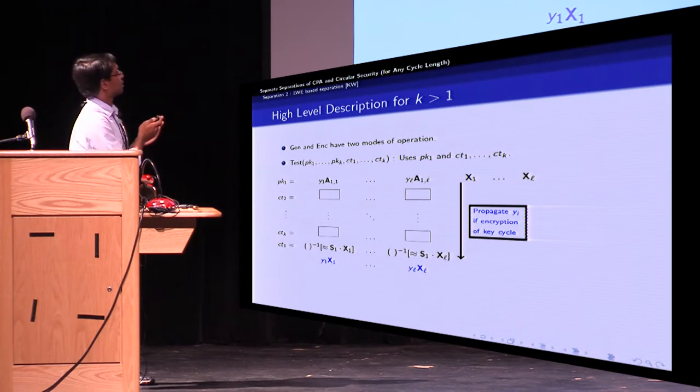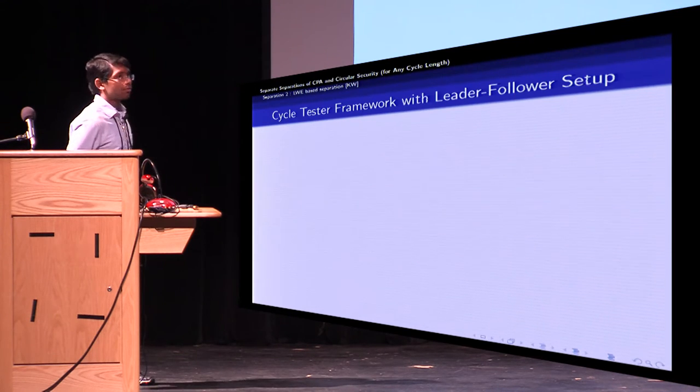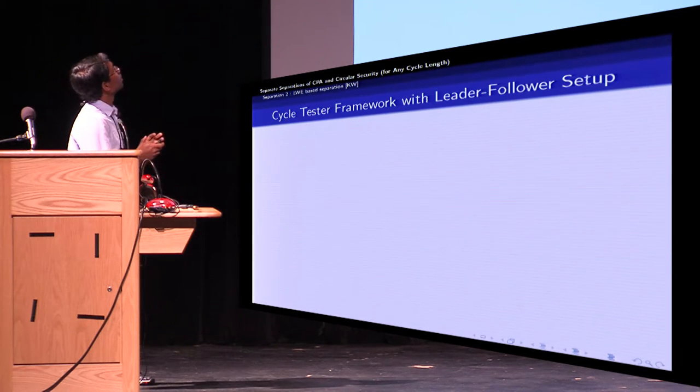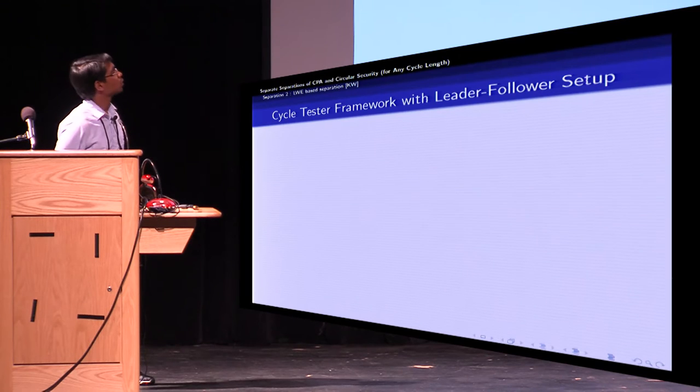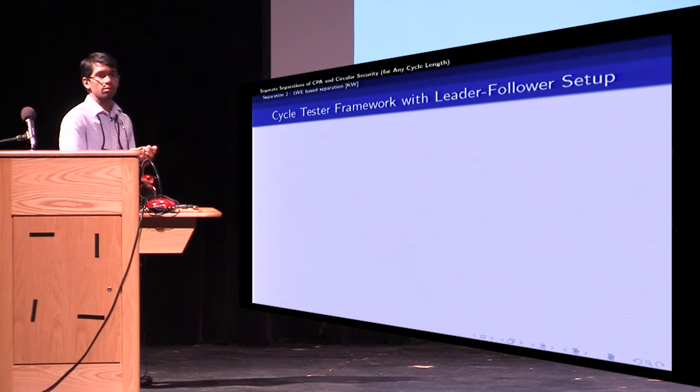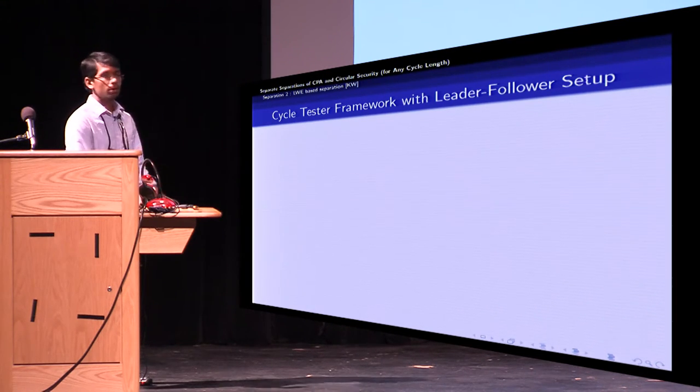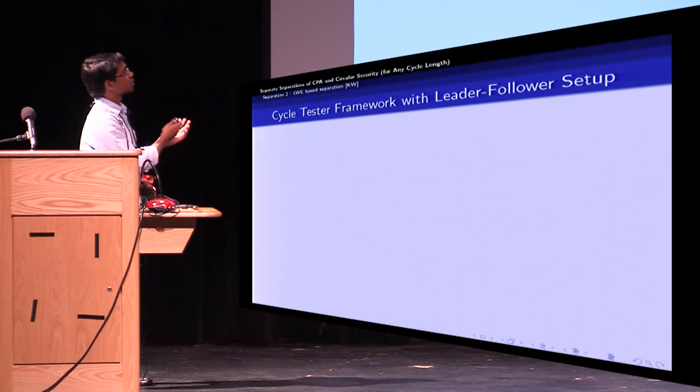So let's see how to implement this. For this, we will first extend the cycle tester framework of BHW to have two special modes called the leader mode and the follower mode. And the leader mode is what we've already seen.